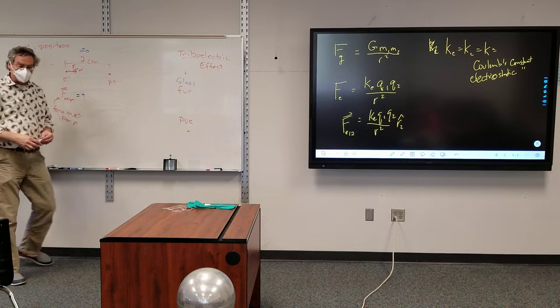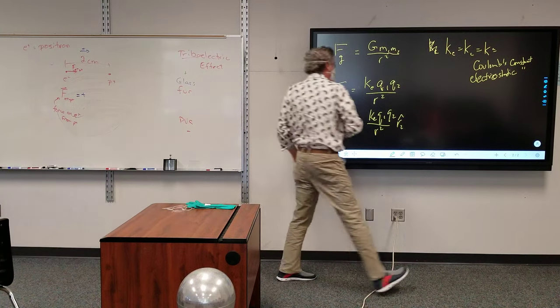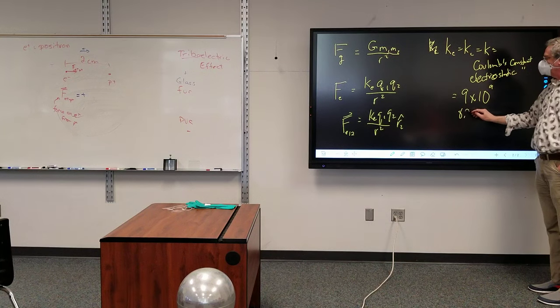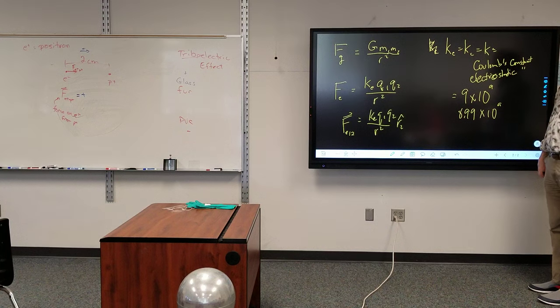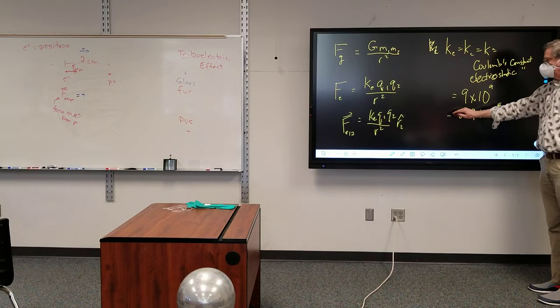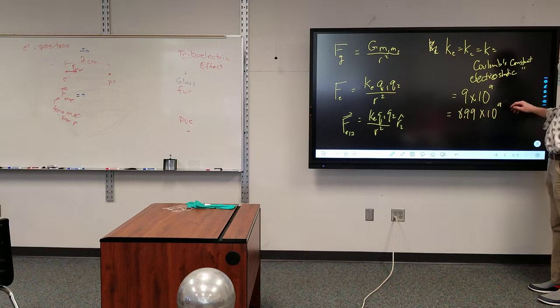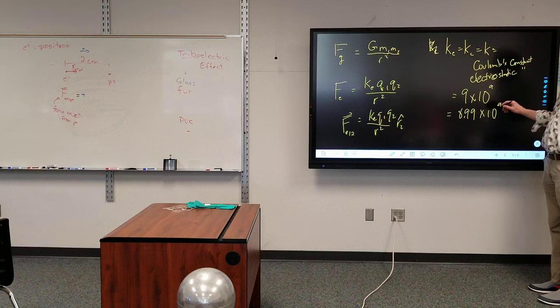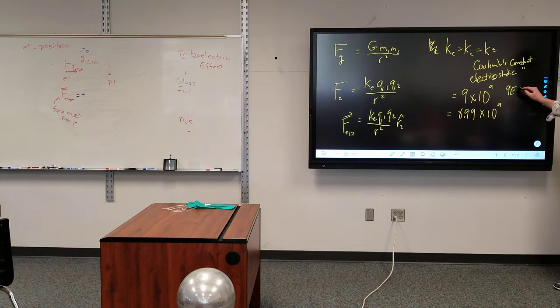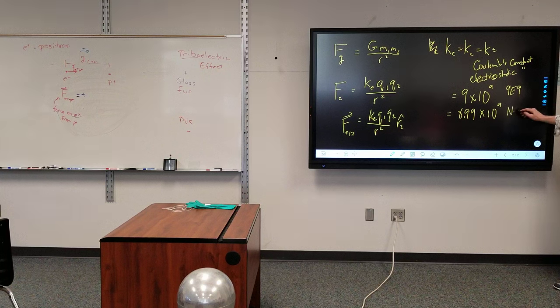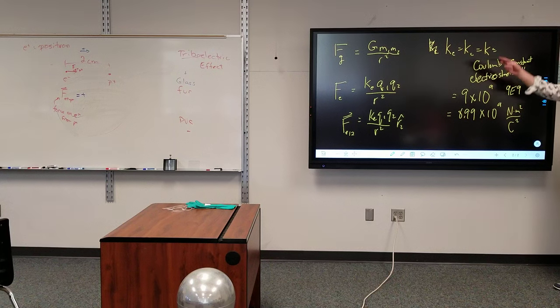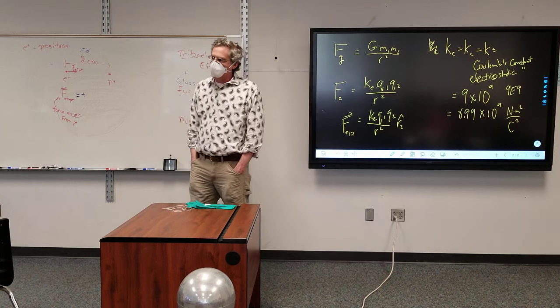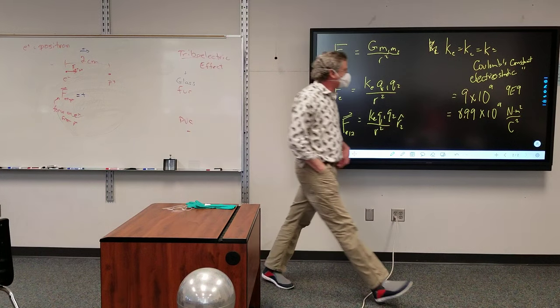Now we just plug and chug. K, oh, I should probably share what K is. Is it 9 times 10 to the 9? It is. 8.99 if you want to take it to three significant figures. And if you want to take it more, look it up. It's all I can ever remember. 9 times 10 to the positive 9. Or on the calculator, 9, E, 9. And the units would be Newton meter squared per Coulomb squared.